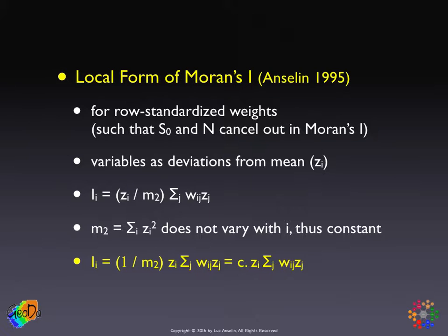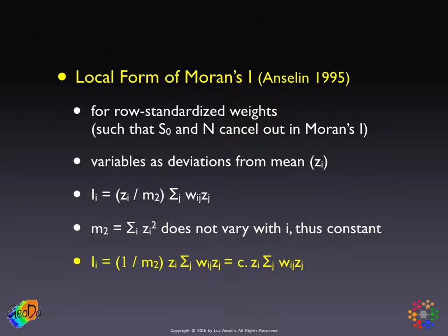Each component of the global Moran's I is actually z, the value at i, times the sum over j of w_ij times z_j, which is the spatial lag at location i. The whole thing is scaled by the second moment — the sum of squares — but since the sum of squares is over all observations it doesn't vary with location, so we can replace it by a scaling factor and for all practical purposes ignore it.